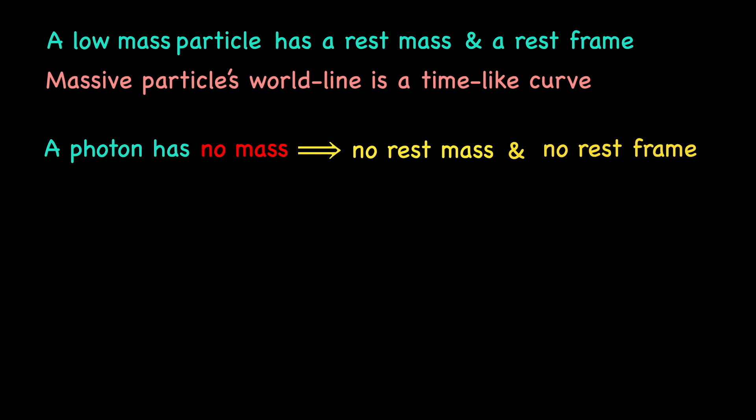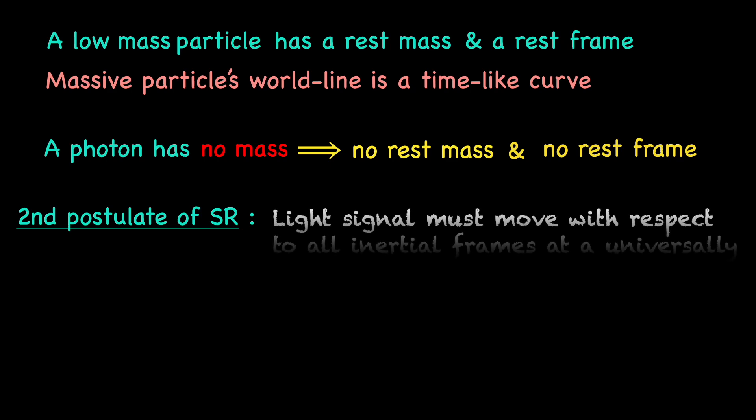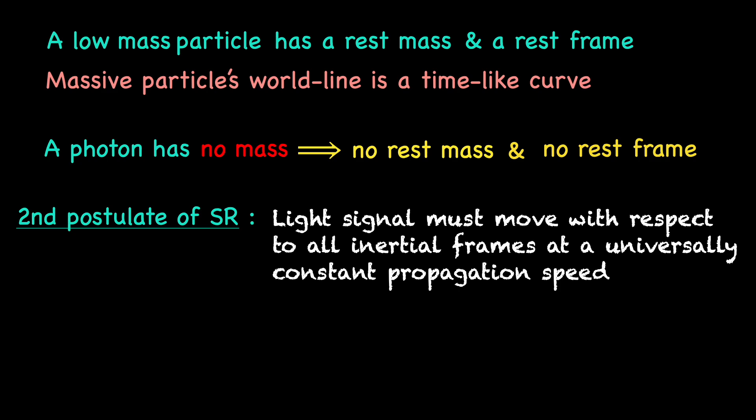To convince yourself, remember the second postulate of special relativity. It says, light signal must move with respect to all inertial frames at a universally constant propagation speed, meaning there is no inertial frame where the photon can be at rest.